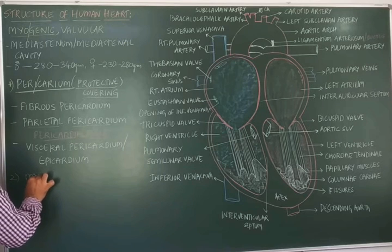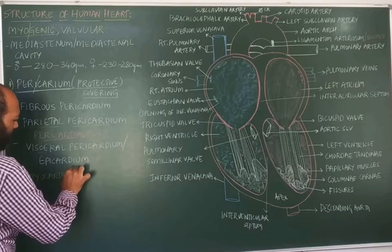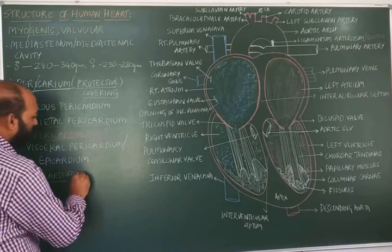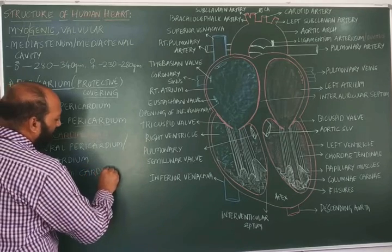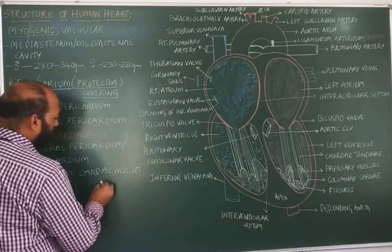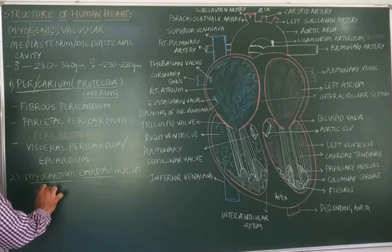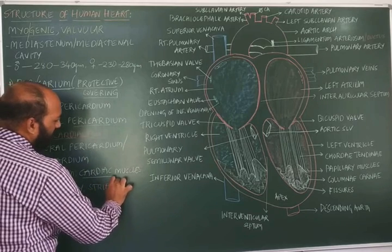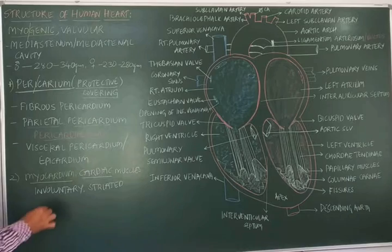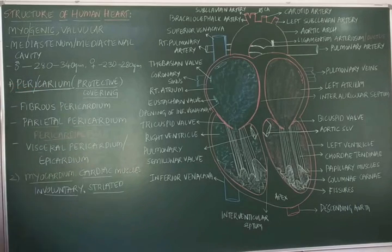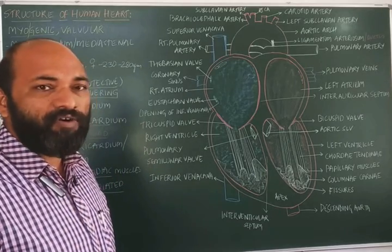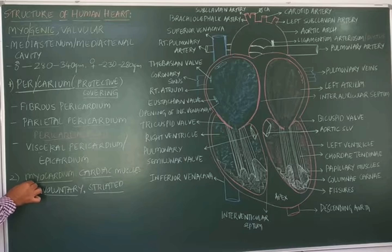The second layer is called the myocardium, which is the middle layer of the heart. 'Myo' refers to muscle and 'cardia' refers to heart, which means this part is made up of muscles called cardiac muscles. These cardiac muscles are involuntary muscles as well as striated muscles — the only muscles in the human body that are both involuntary and striated. They are responsible for the origin and conduction of the heartbeat.